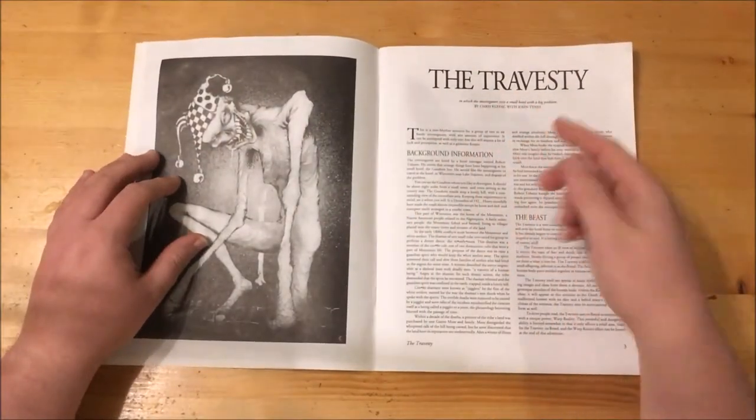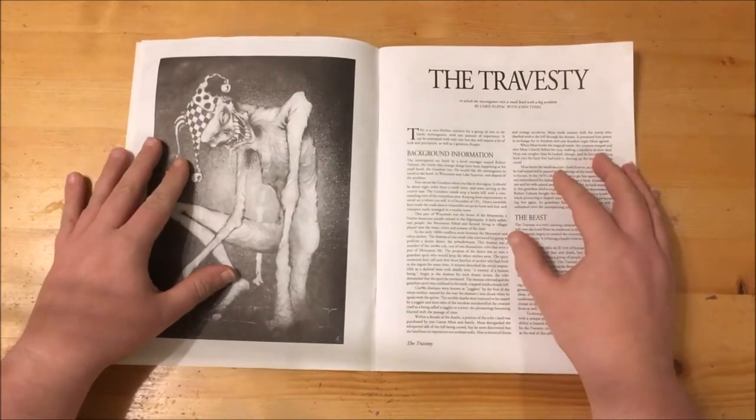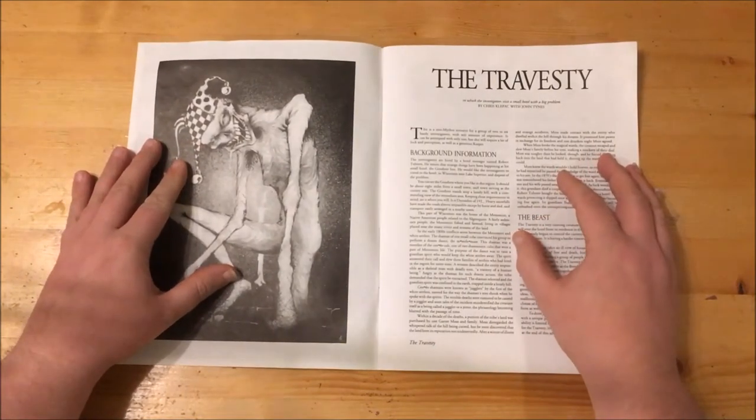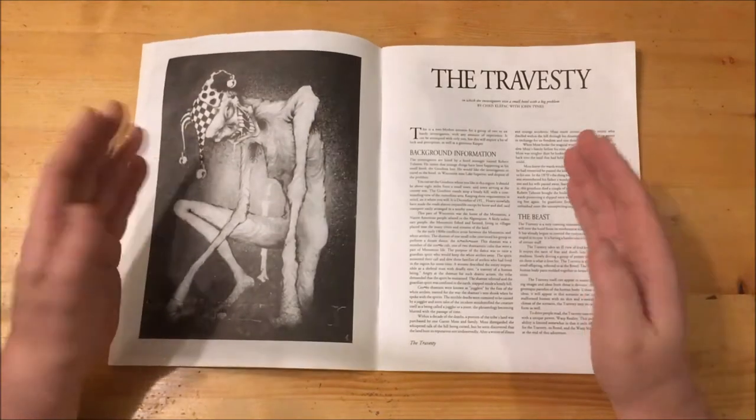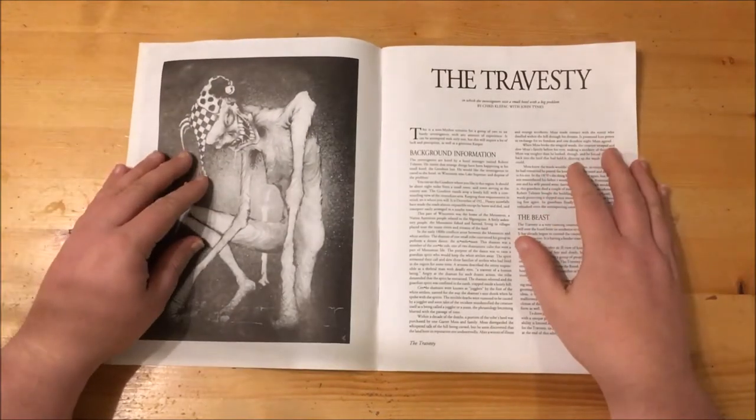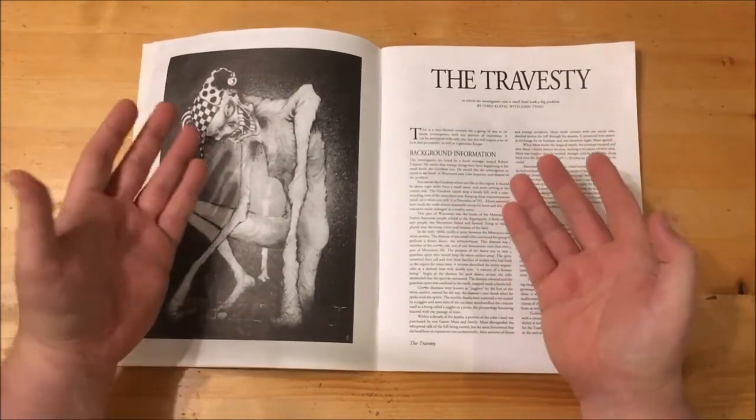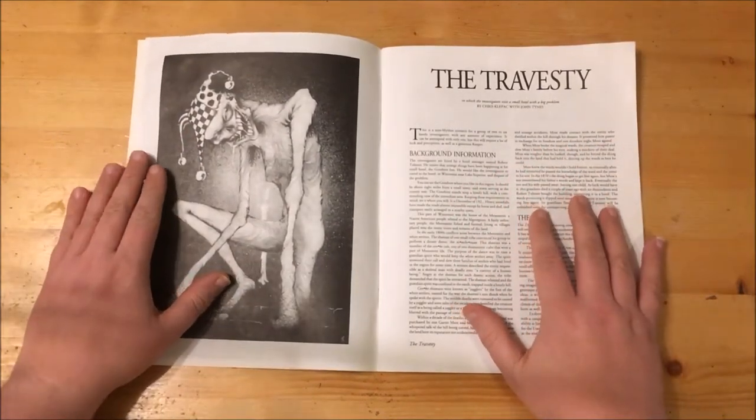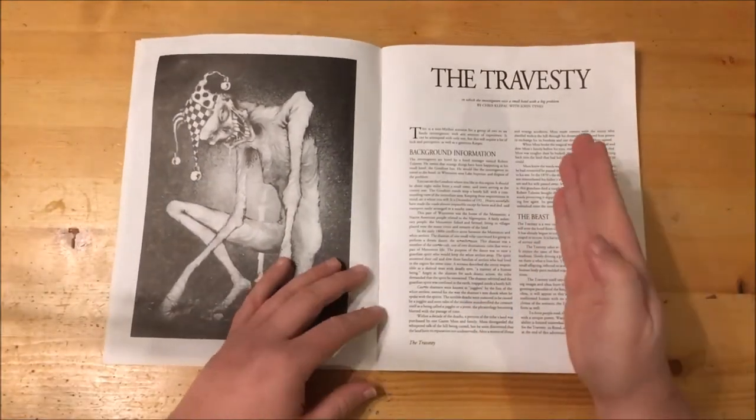Then we go straight into the first scenario, The Travesty. There will be spoilers from this point on so stop reading now if you intend to play this. The Travesty is a non-mythos scenario that takes place in the Goodrest Inn in Wisconsin near Lake Superior. The Inn sits atop a lonely hill and involves the manager, Robert Tollison, who has called the adventurers to come and investigate strange happenings.